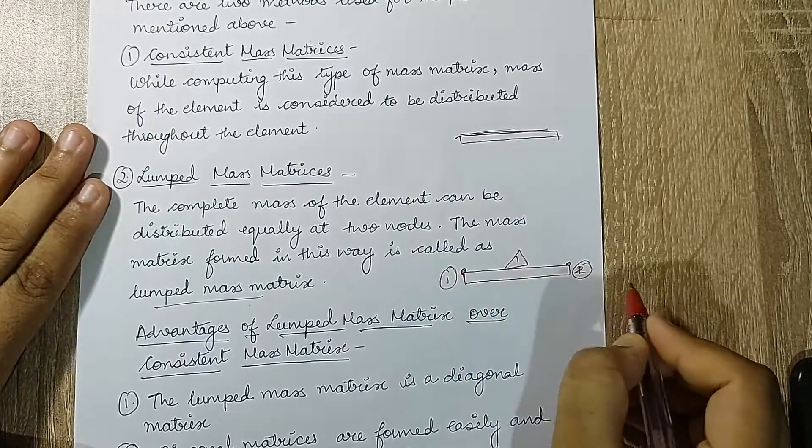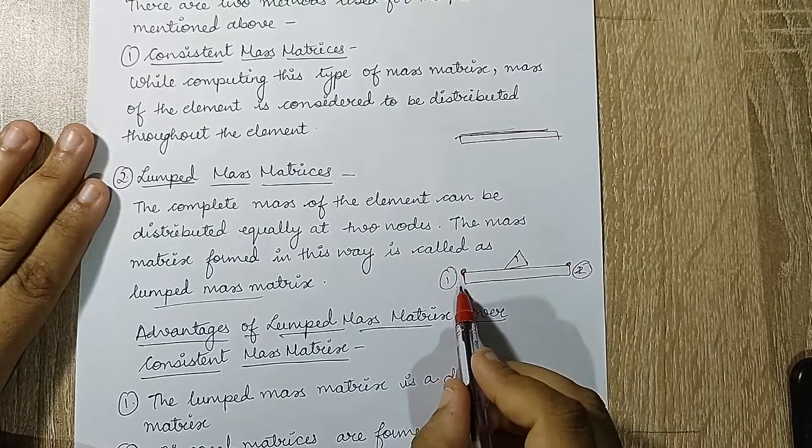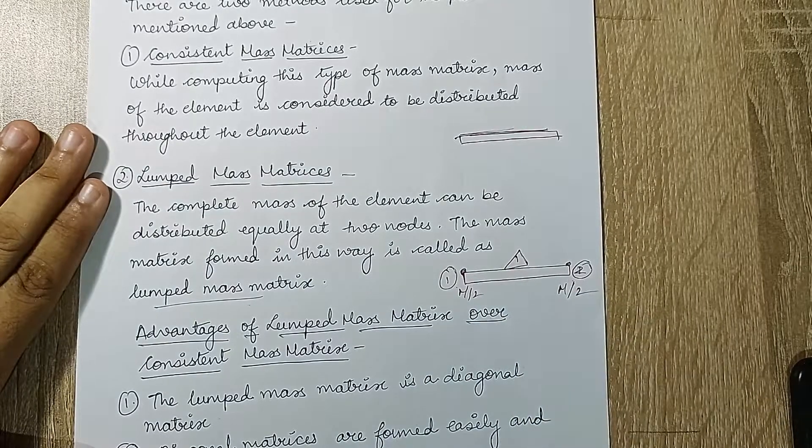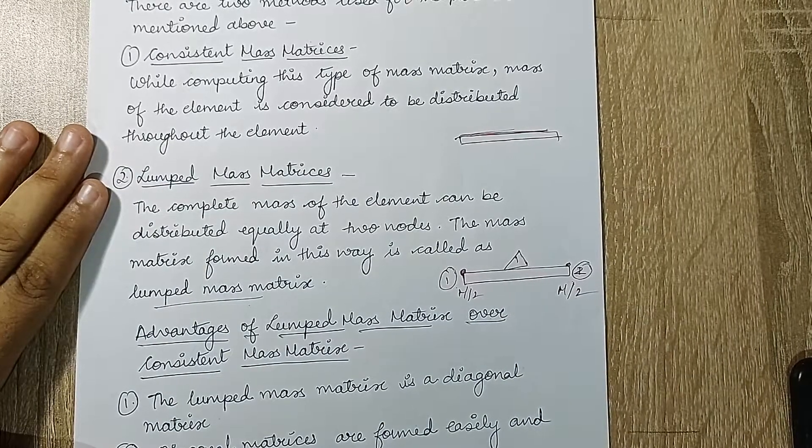This is only one element, so the mass will be equally divided. This will be m by two and this will be m by two. This is called lumped mass matrix method.